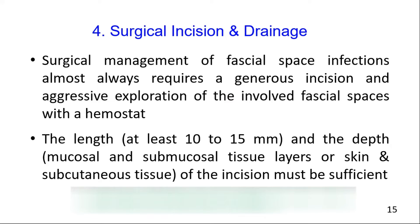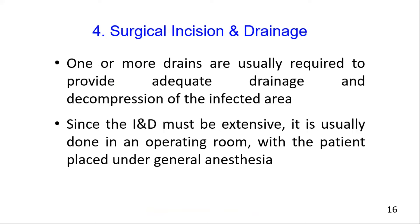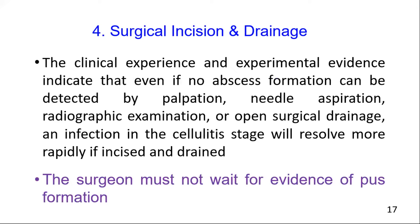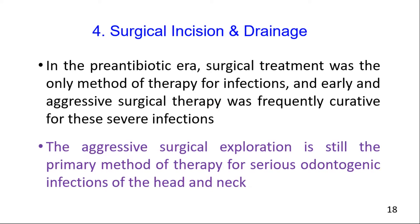The length of the incision must be sufficient — at least 10 to 15 mm — and the depth must reach through the mucosal and submucosal tissue layer, or skin and subcutaneous tissue. For adequate drainage and decompression, one or more drains are required. The procedure should be done under general anesthesia. The surgeon must not wait for evidence of pus formation, because if surgical incision and drainage is performed even when no abscess formation is detected, an infection in the cellulitis stage will resolve more rapidly. Early aggressive surgical treatment was the primary and frequently curative method of therapy for severe infections in the pre-antibiotic era and remains the primary method today.